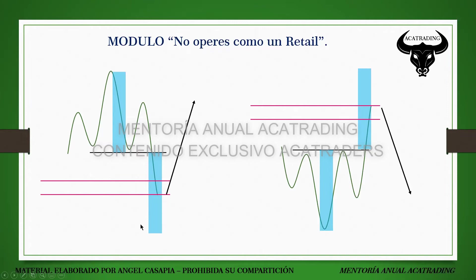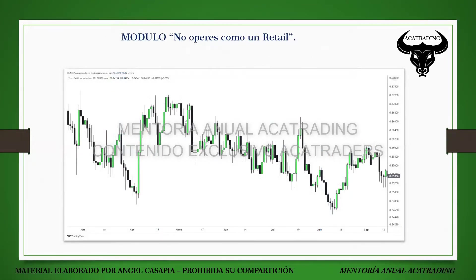Vamos a ver un ejemplo sencillo en Euro Libra, un par que no he tocado hasta el momento en la mentoría. Euro Libra es un activo comparativo que podemos utilizar también para determinar divergencias con pares que tienen el Euro y la Libra. Estoy en temporalidad diaria para quienes aplicarían position trading. Aplicar position trading no quiere decir que tengas que asumir stop loss de 1000 pips; el segundo mes fue para construir setups de bajo riesgo y tener ratios realistas de 10 a 1 o mayores.